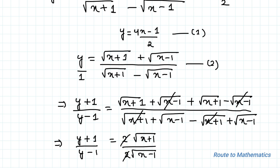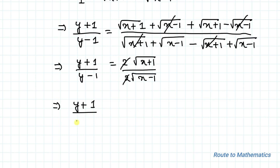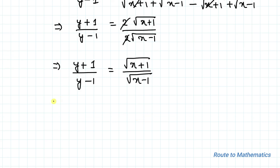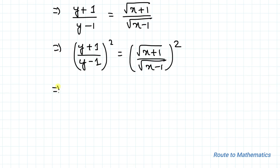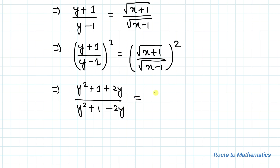The 2s cancel out, giving (y + 1) / (y − 1) = √(x+1) / √(x-1). Now squaring both sides: (y + 1)² / (y − 1)² = (x + 1) / (x − 1).